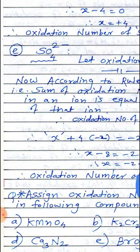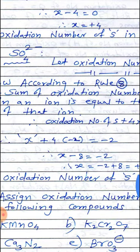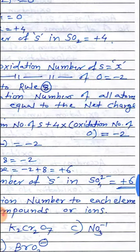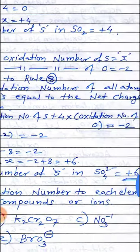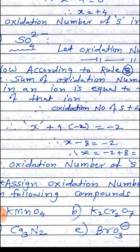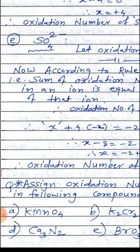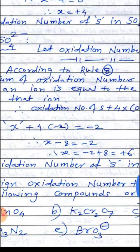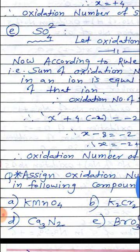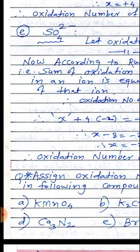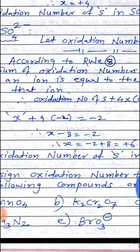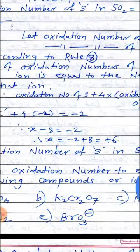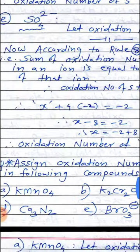Next, E: SO₄²⁻, given in the form of an ion. Let the oxidation number of S equal to x as usual. The oxidation number of oxygen equals minus 2. Since SO₄²⁻ is an ion, we apply rule number 8, which states that the sum of oxidation numbers of all atoms present in an ion equals the net charge on that ion.